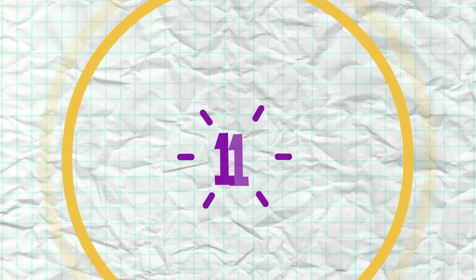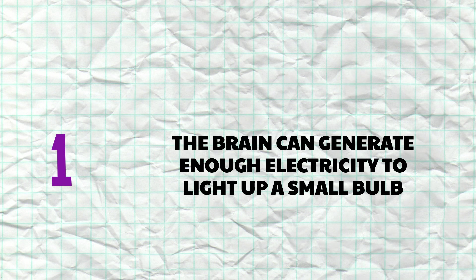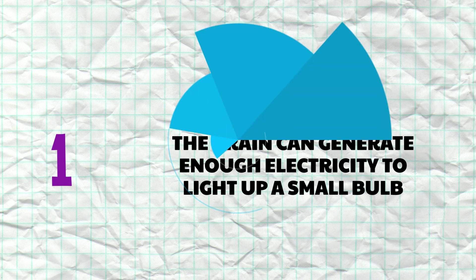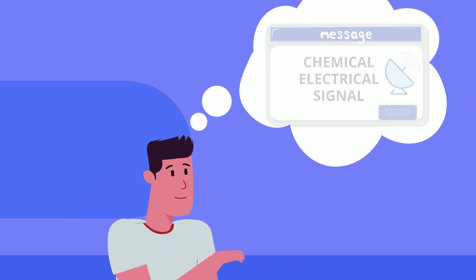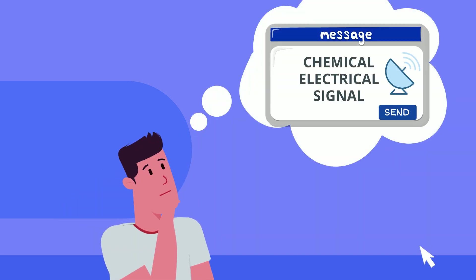Number 1: The brain can generate enough electricity to light up a small bulb. Did you know that while watching this video, your brain is sending off chemical electrical signals to help you understand what you're seeing?